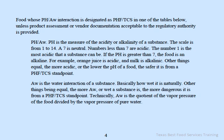PH is the measure of acidity or alkalinity of a substance. The scale is from 1 to 14. A 7 is neutral; numbers less than 7 are acidic, with 1 being the most acidic. If the PH is greater than 7, the food is alkaline. For example, orange juice is acidic and milk is alkaline. Other things being equal, the more acidic or lower the PH of a food, the safer it is from a PHF-TCS standpoint.